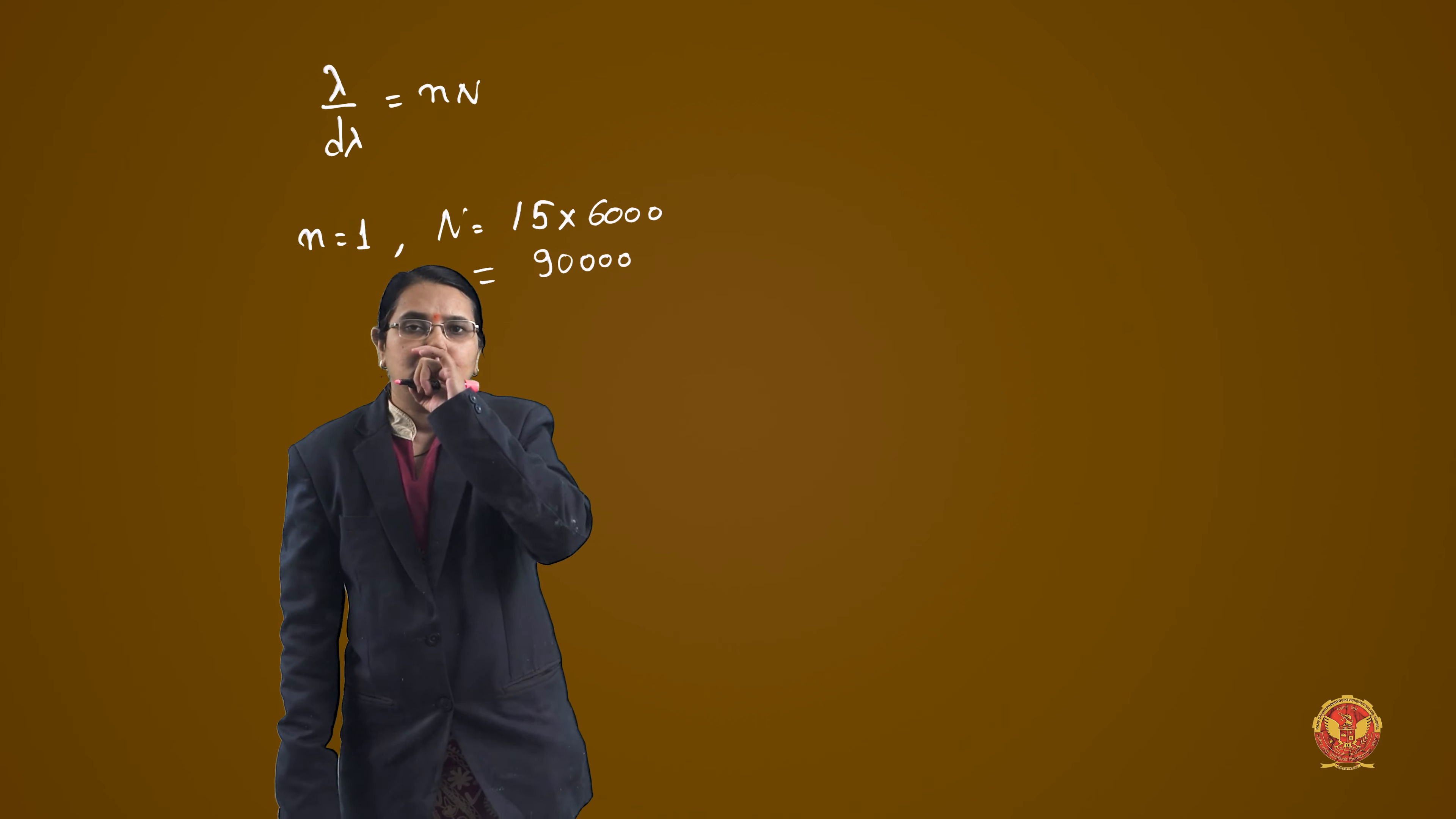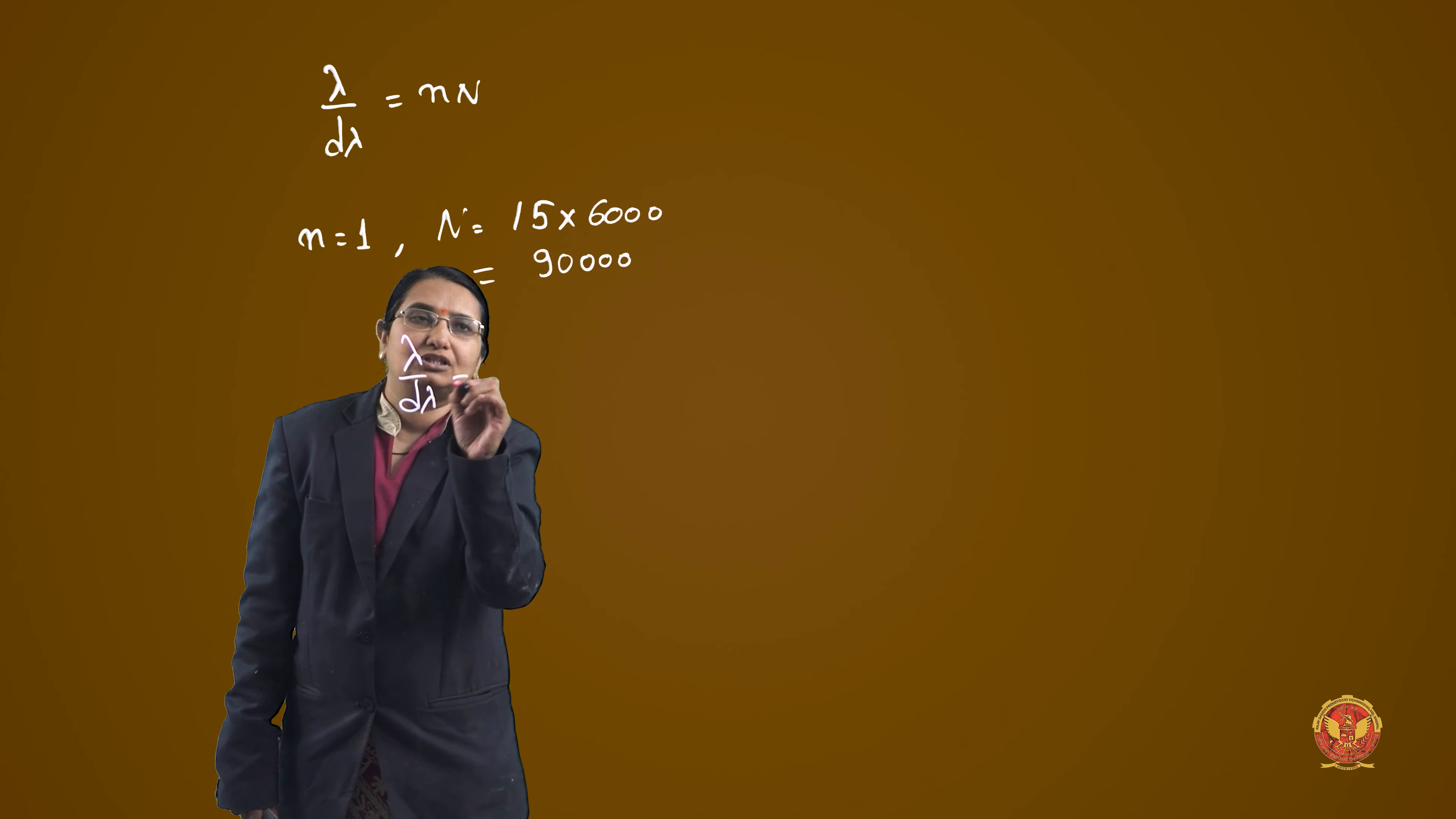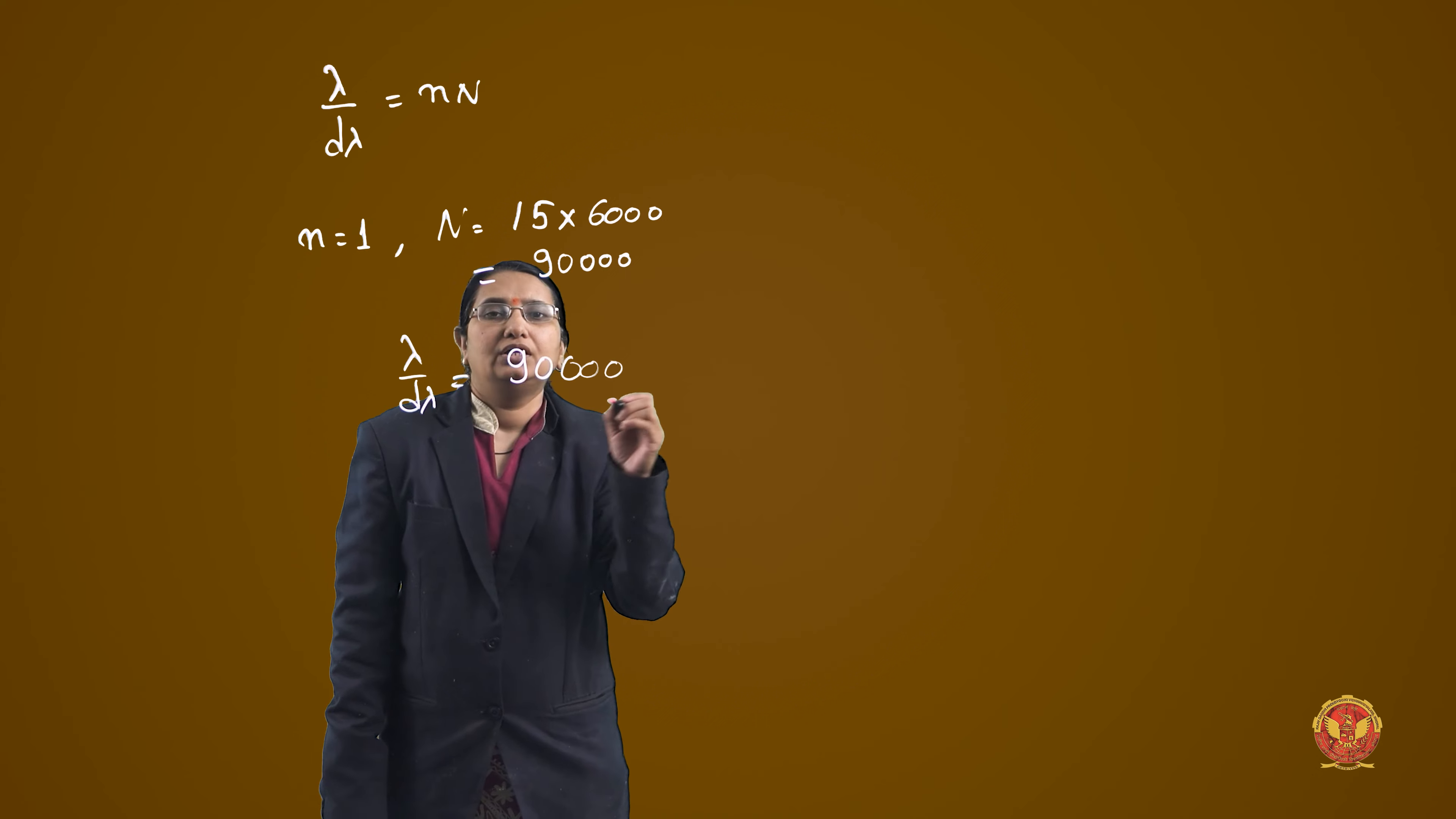So number of lines is 90,000. So n is equal to 1. Therefore, lambda upon d lambda is 90,000. This is your resolving power of grating.